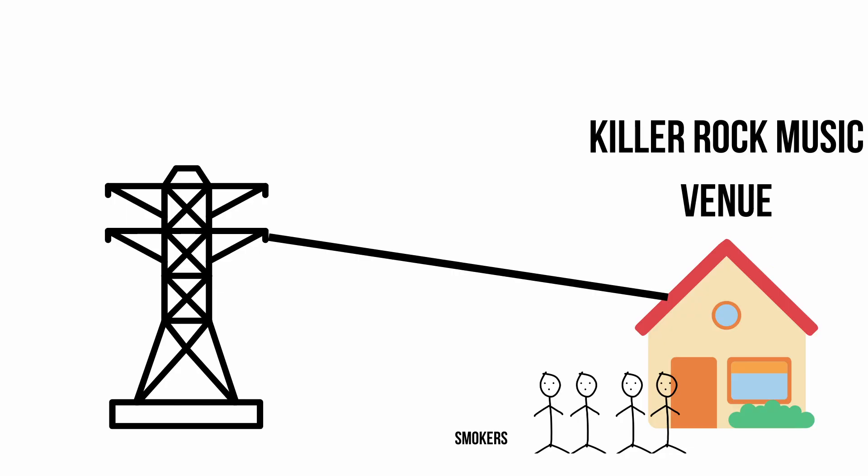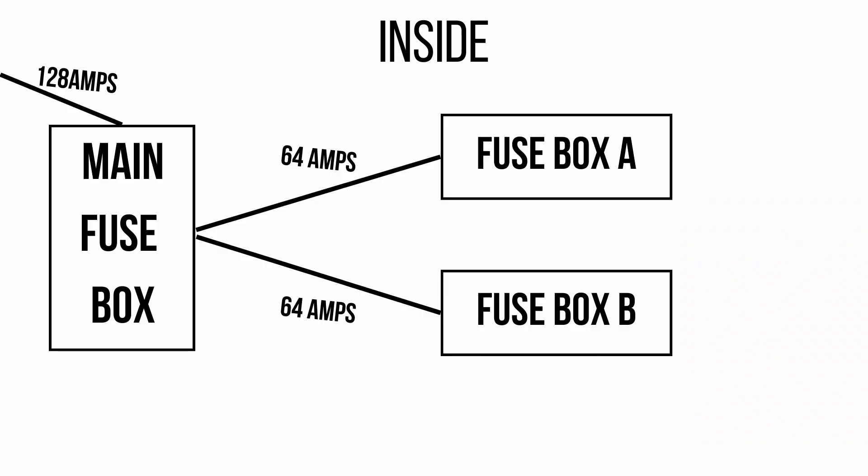I won't get into the physics, but let's look at the practicalities. Power comes into the building at a very high current — let's say 128 amps, with amps being how we measure current. That comes into the building and we split it down to different points. So our 128 is split down into two 64s. These numbers are arbitrary and may differ where you are in the world.